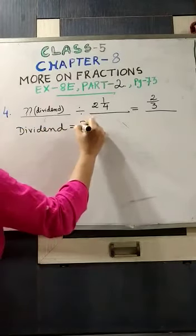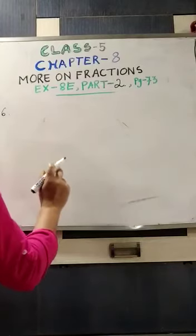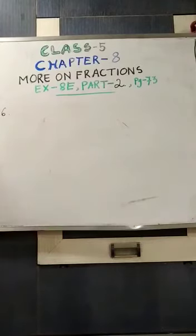Number 6. Look at the book. Bimal walks 4 whole 1 by 4 kilometer every day. What distance does he walk in 12 days? Every day means each day. That means one day. So, in one day, Bimal walks 4 whole 1 by 4 kilometer.